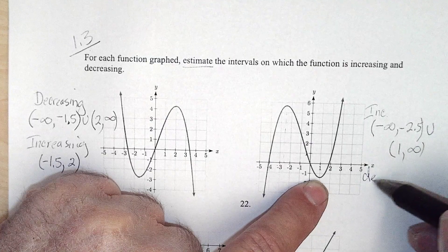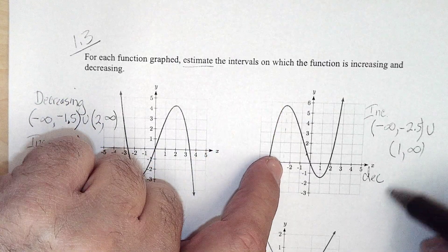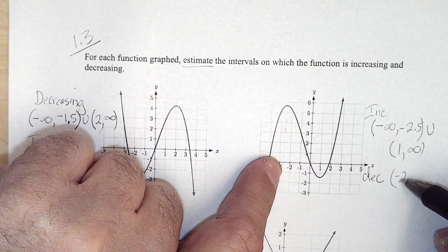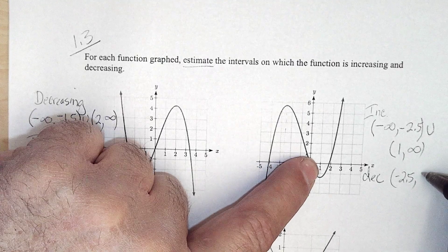And it looks like it decreases from x value of negative 2.5 to an x value of 1.